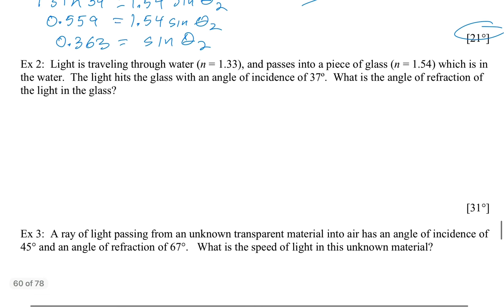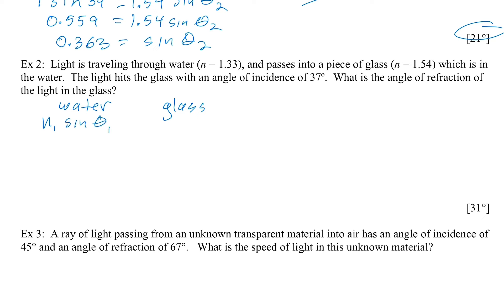Light is traveling through water. So once again, I'm going to say we started in the material water. And then it goes into glass. So those are the two materials. So N1 sin θ1 is going to be about when it's in the water. And N2 sin θ2 is going to be when it's in the glass.